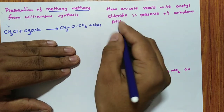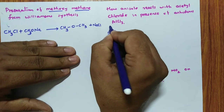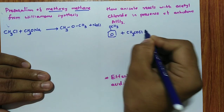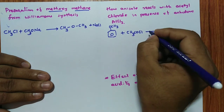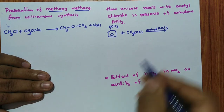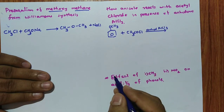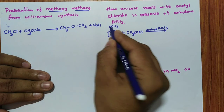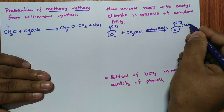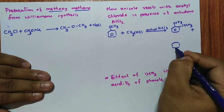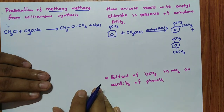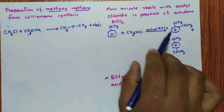Anisole (methoxybenzene, OCH3 on benzene) reacts with acetyl chloride (CH3COCl) in presence of anhydrous AlCl3. This is called Friedel-Crafts acylation. Since OCH3 is an ortho-para director, the COCH3 group goes to the ortho position on one molecule and the para position on another molecule, giving the respective ortho and para products.